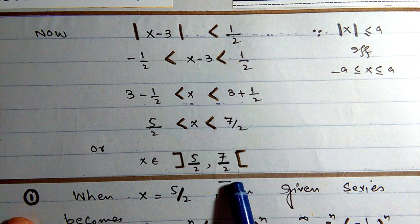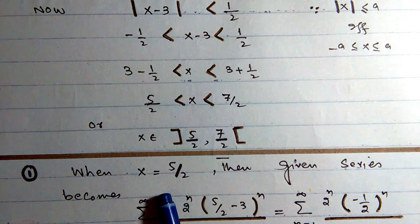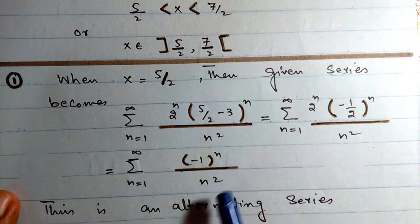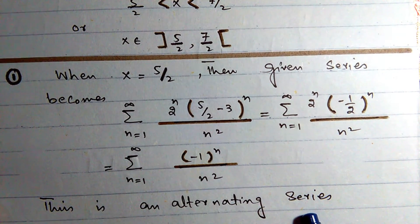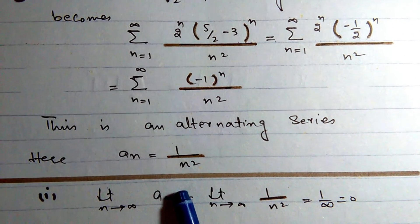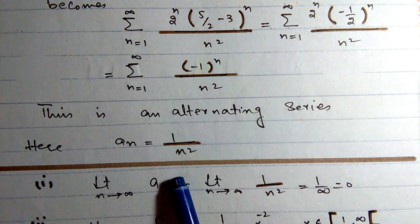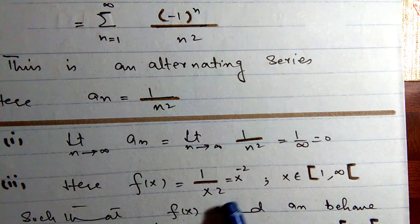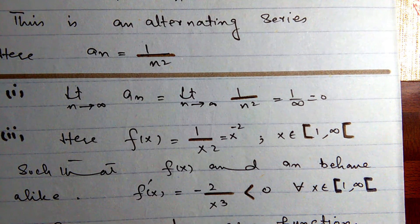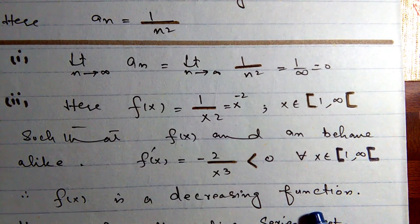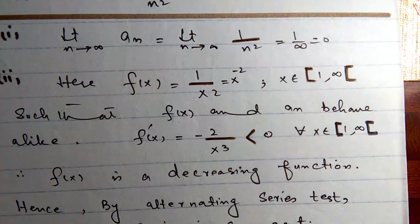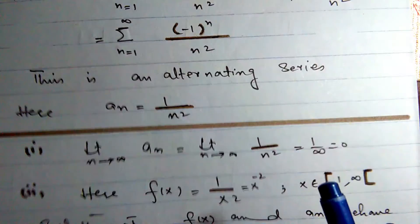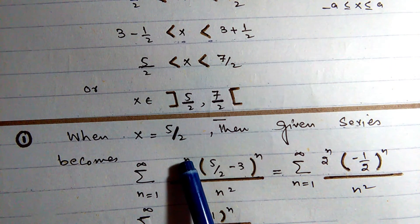At x = 5/2, substituting into the given series yields summation of (-1)^n / n², an alternating series. Here a_n = 1/n². The limit of a_n as n→∞ is 0, and f(x) = 1/x² has negative derivative, so the function is decreasing. Both conditions of the alternating series test are satisfied, so the series converges at x = 5/2.